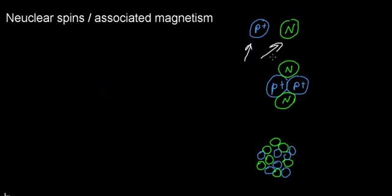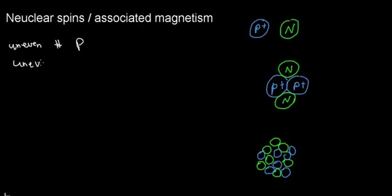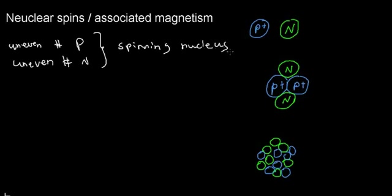A question may arise: if protons and neutrons spin, does that mean the whole nucleus spins? The answer is maybe — because you need a condition: you need to have an uneven number of protons or an uneven number of neutrons in order to have a spinning nucleus.